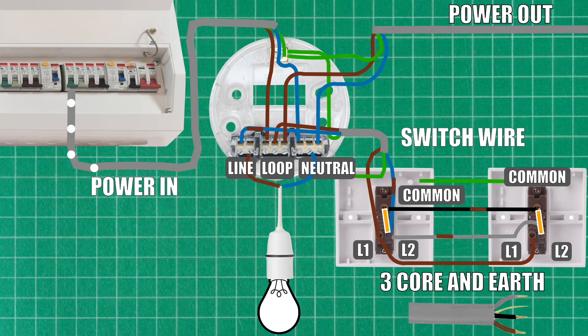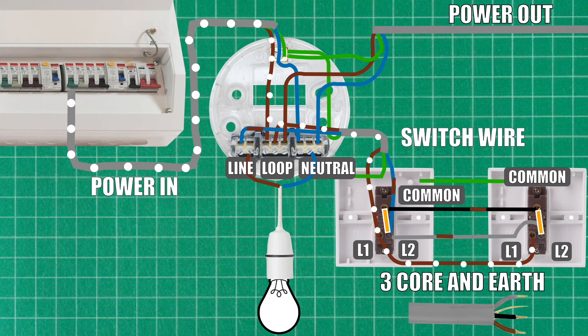So initially the power is delivered from the consumer unit to the ceiling rose. The live cable goes into the loop, then the switch wire live exits the loop and makes its way down to the L1 terminal of the first switch. From there, the brown wire of the three core and earth is linked between the switches L1 to L1. The gray cable is linked L2 to L2. The black cable common to common. And the earth cable is linked to the earth terminal. Now the switch has a metal conductor as illustrated right there by the arrows. And when you click the switch, the common makes contact with either the L1 or L2 terminals, and this will either make or break the circuit.